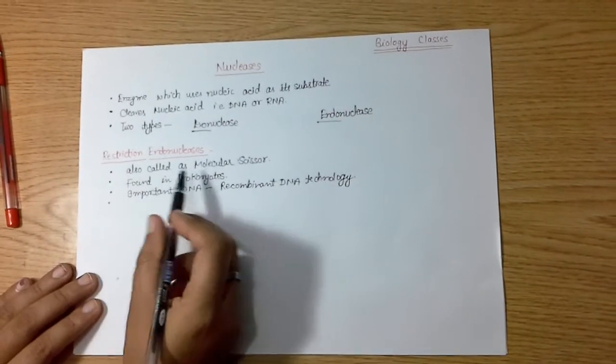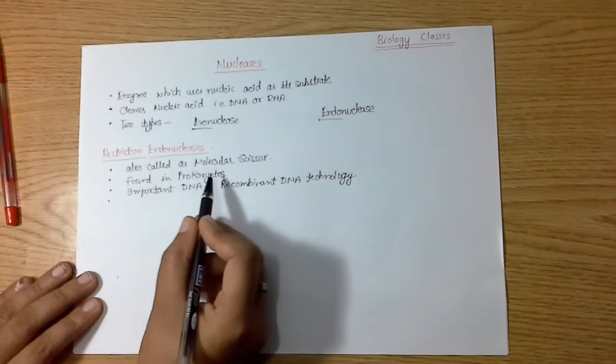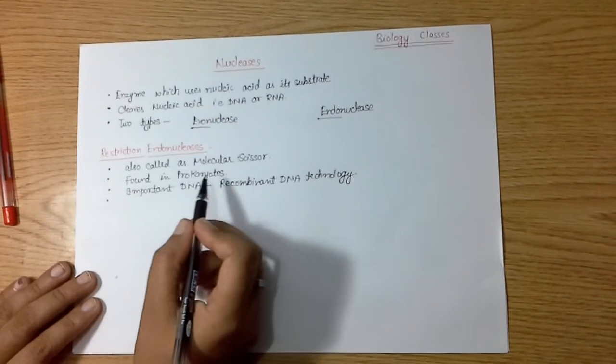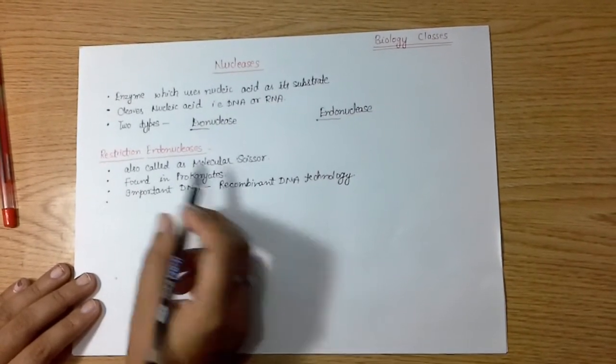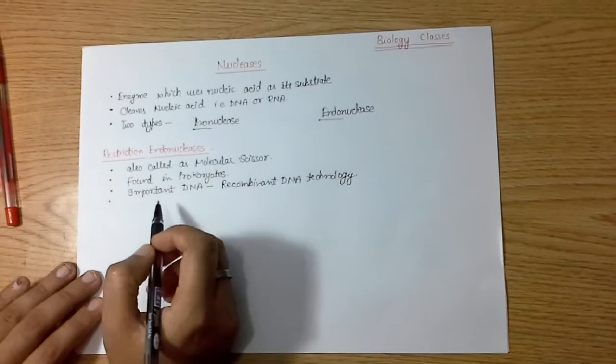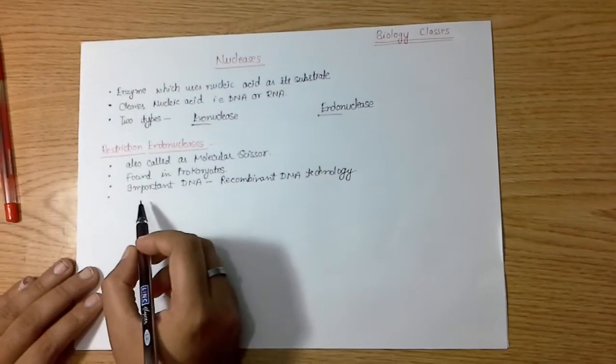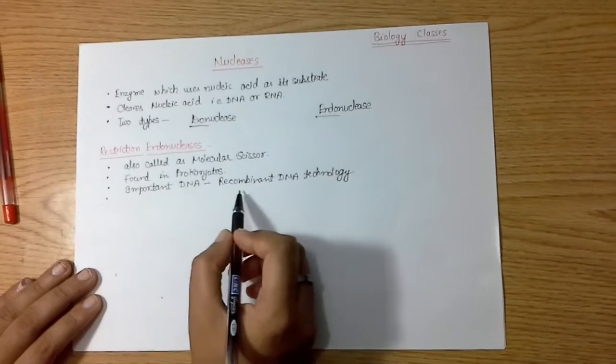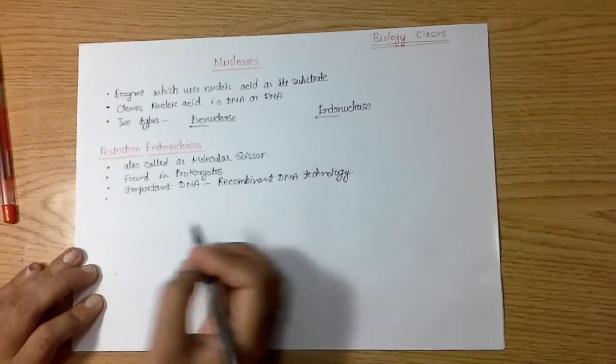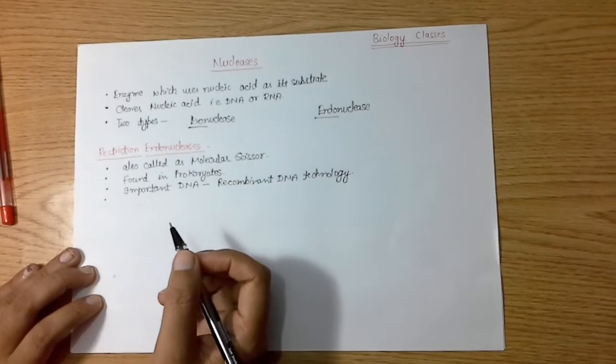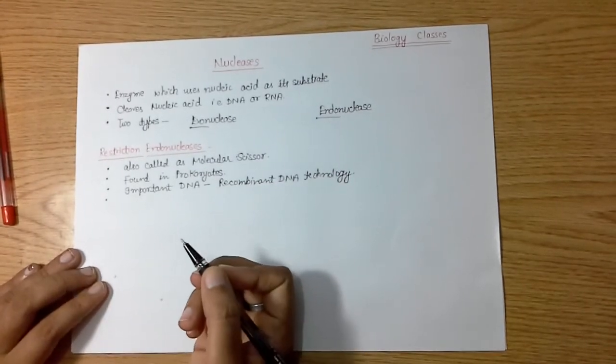Some key points about restriction endonucleases: they are also called molecular scissors because of their cleaving nature within the DNA. They are found in prokaryotes like bacteria and are very important for recombinant DNA technology. We can say they act as a foundation of recombinant DNA technology.